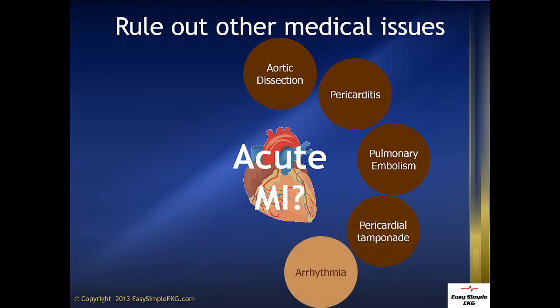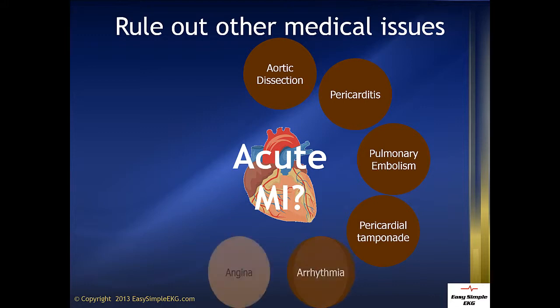Arrhythmias can cause ST changes on an EKG, but the problem with arrhythmias is you don't know if the changes are due to the arrhythmia or CAD. If possible, the arrhythmia needs to be eliminated so the underlying rhythm can then be interpreted.